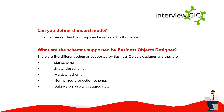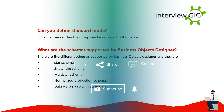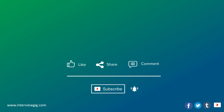Can you define standard mode? In standard mode, only users within the group can be accessed. What are the schemas supported by Business Objects Designer? There are five different schemas supported by Business Objects Designer, and they are: star schema, snowflake schema, multi-star schema, normalized production schema, and data warehouse with aggregates.